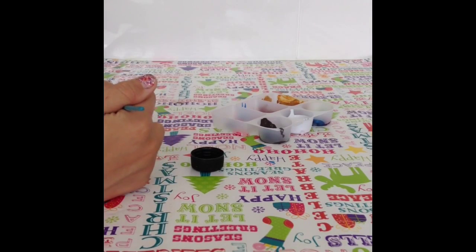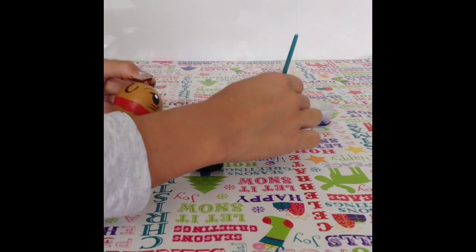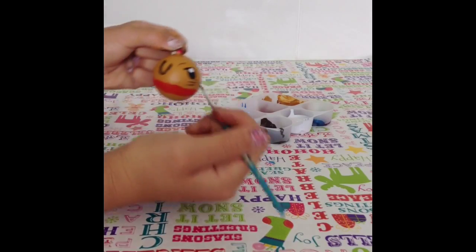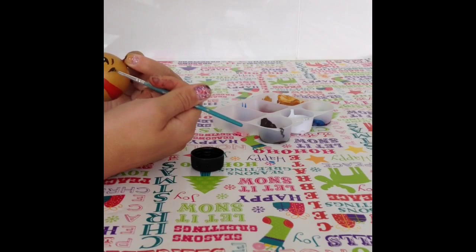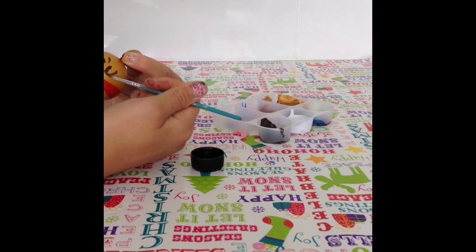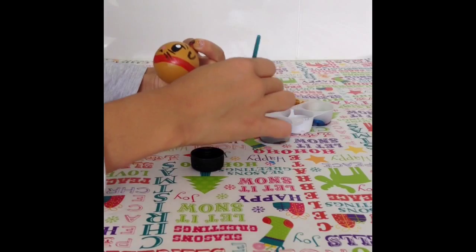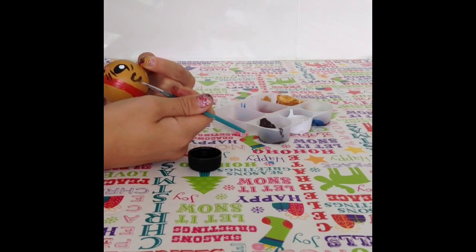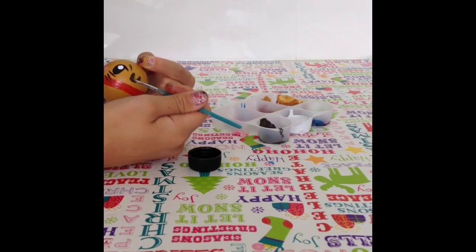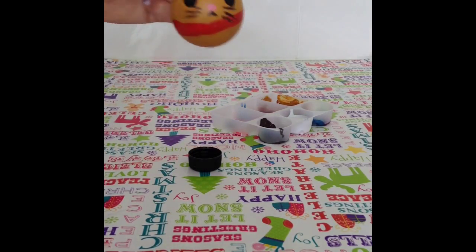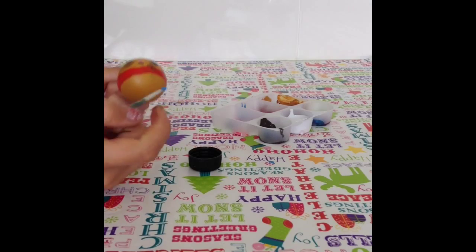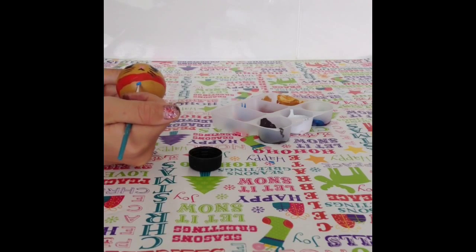Now you draw an ear on each side. Now you leave it to dry. And then after it's dried, you put a little blue dot under the collar as a tag.